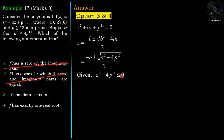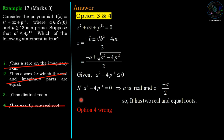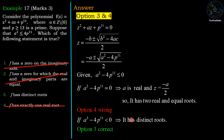If a² − 4p¹¹ = 0, then z = −a/2, a repeated real root — so f has two equal roots, not exactly one real root, making option 4 false. If a² − 4p¹¹ < 0, the roots are complex and distinct. So option 3 — f has distinct roots — is correct.